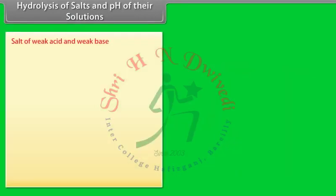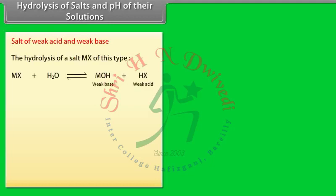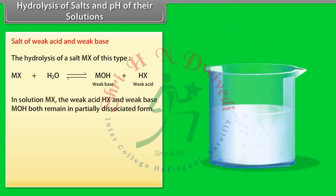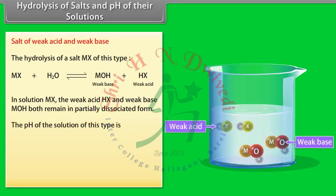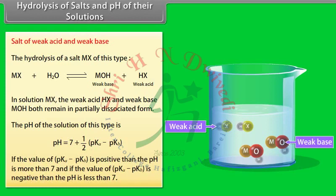For a salt of a weak acid and a weak base, both the weak acid HX and weak base MOH remain partially dissociated. The pH of this solution is given by pH = 7 + ½(pKa − pKb). If pKa − pKb is positive, pH is greater than 7; if negative, pH is less than 7.